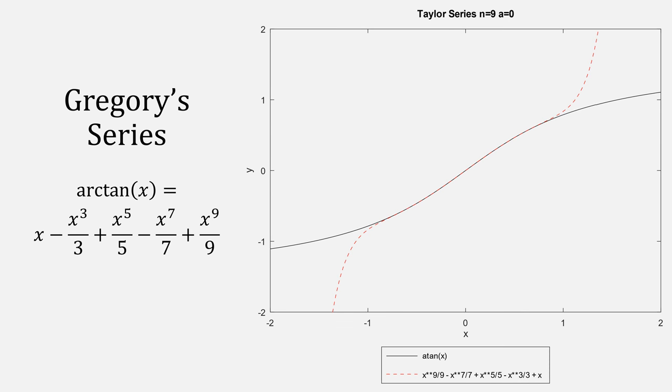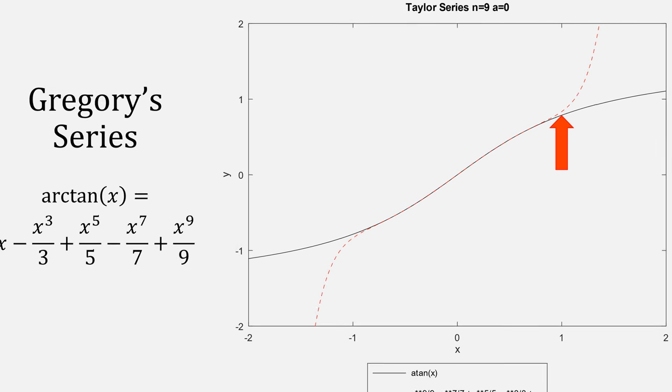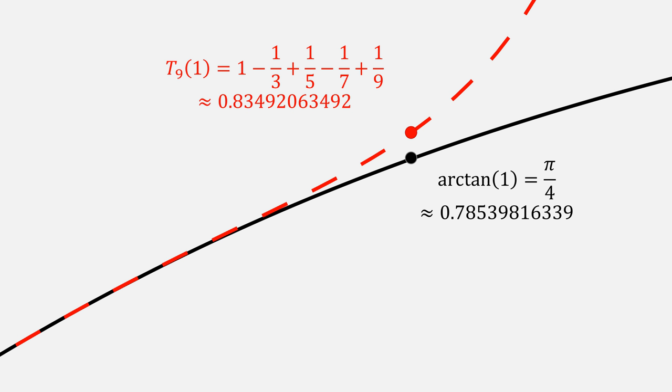Here is our 9th order Taylor series for the arctangent. Let's see how close it is at 1. Here, there is quite a noticeable gap between our Taylor series at 1 and the actual Pi over 4. If we were to multiply this by 4, that gap would only increase. Let's talk about a few strategies we can do to fix this.